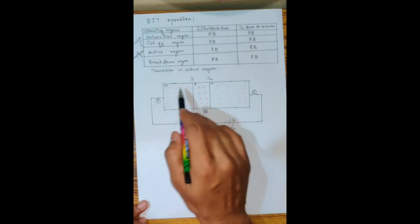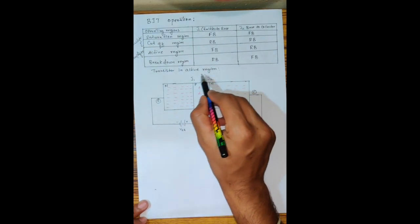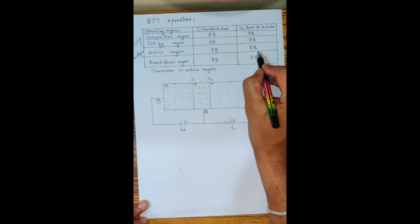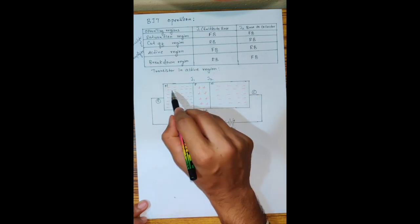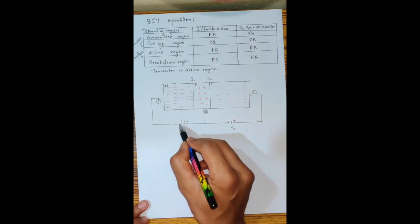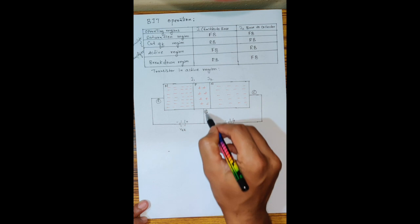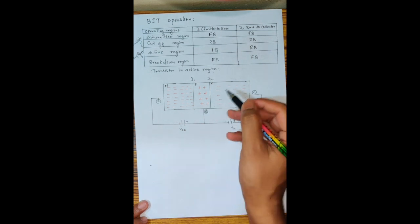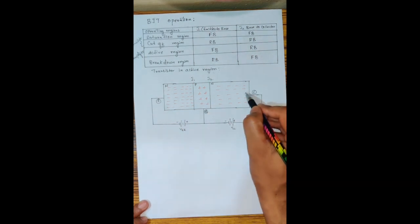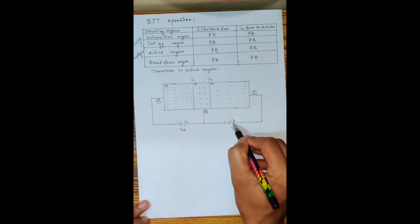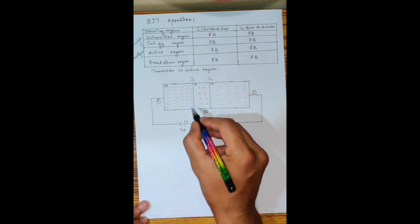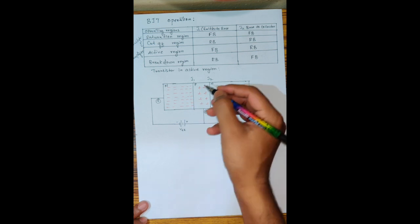For better understanding, we consider the NPN transistor operated in the active region. Since it is in the active region, junction J1 should be forward biased and junction J2 should be reverse biased. For J1 (between N and P) to be forward biased, the negative terminal of the battery is connected to the N-type and the positive terminal to the P-type. For J2 to be reverse biased, the P-type is connected to the negative terminal and the N-type to the positive terminal.